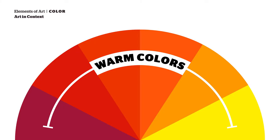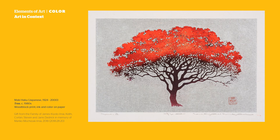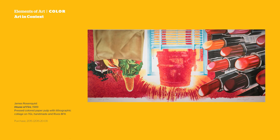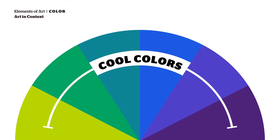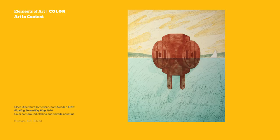One common way that we categorize color is by temperature. Reds, oranges, and yellows are referred to as warm because they can remind us of a campfire or a warm, sunny day. Purples, blues, and greens are referred to as cool colors because they can remind us of cool ocean water or chilly, rainy days.